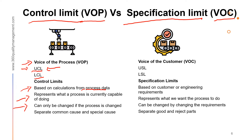Control limits can only be changed if there is a process change or process improvement. The signals in the control chart will tell us if there is common cause or special cause variation. I have put a link to my YouTube video that explains more about common cause and special cause — do check that video if you would like to understand more.